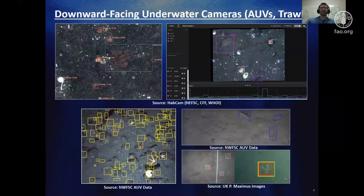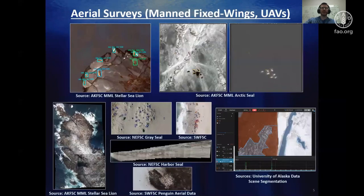People have begun applying VIAME to a diverse range of data and challenging problems. For example, here are images from underwater downward-facing cameras pointed at the sea floor. Many of these problems require collection platforms to apply their own illumination and necessitate running image enhancement prior to automated detectors. Aerial surveys are also fairly popular — you can see a diverse range of climates with different types of seals and sea lions, from the Arctic all the way to warmer climates such as off the coast of San Diego. Scene segmentation has also come up with a few groups, such as for classifying land cover into different categories.